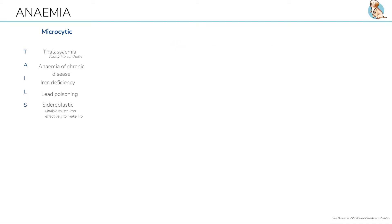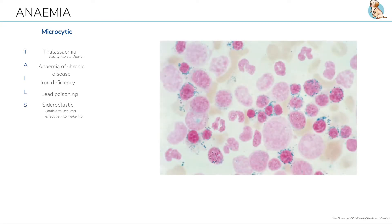I for iron deficiency — the most common — L for lead poisoning, and S for sideroblastic anemia, when the cells are unable to use iron effectively to make haemoglobin.